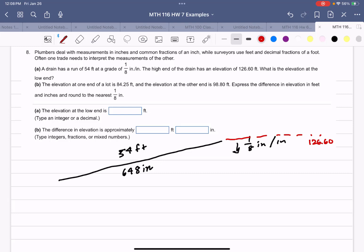So the high end of the drain is 126.60 feet elevation, and now they want to know where the low end of the drain is, what's the elevation after that drop. So we're going to have to multiply 648 times 1/8 and we get 81. So this is how much it dropped, 81 inches.